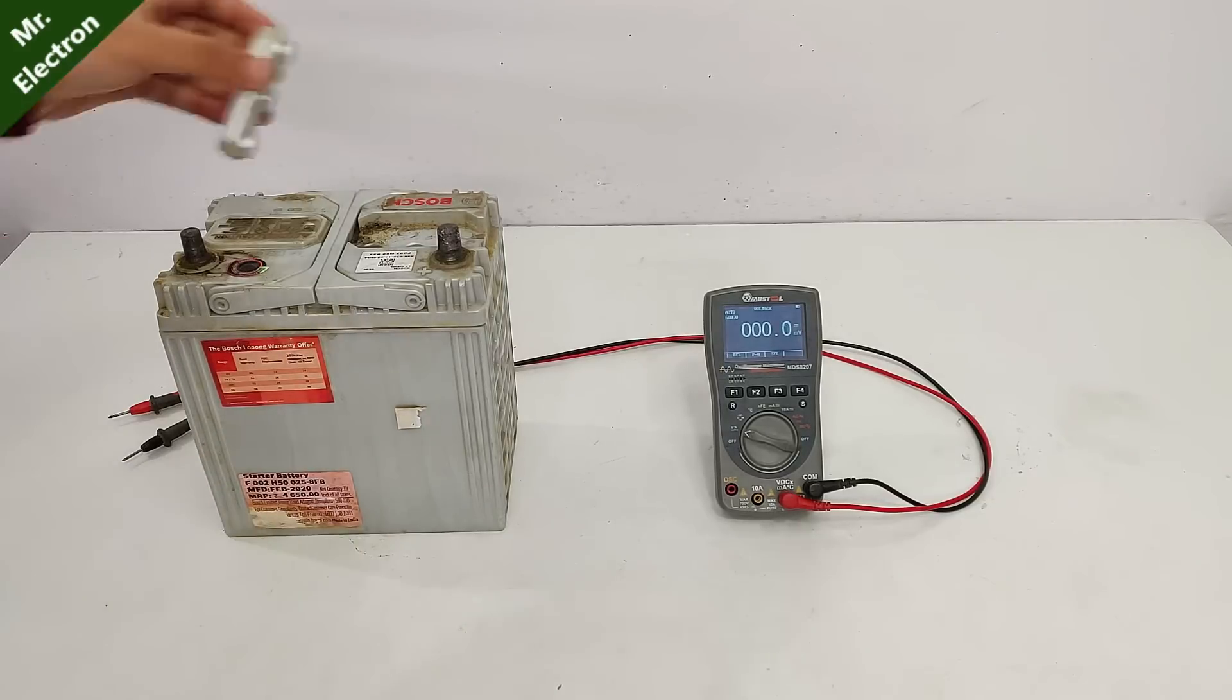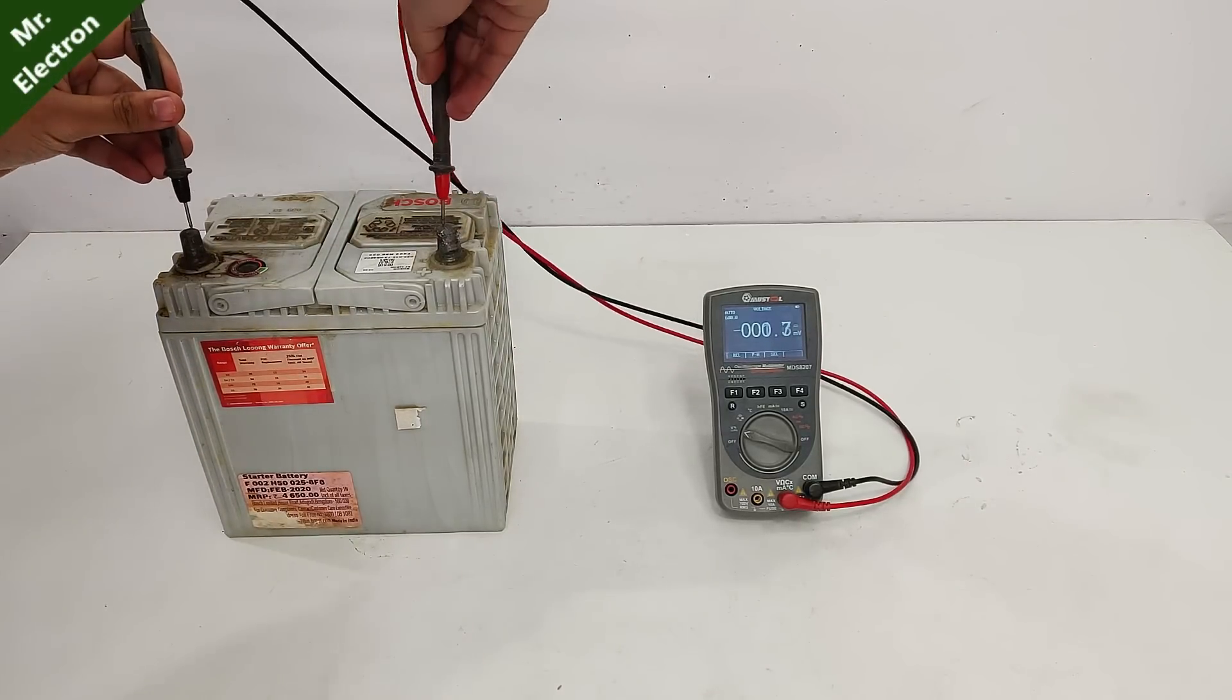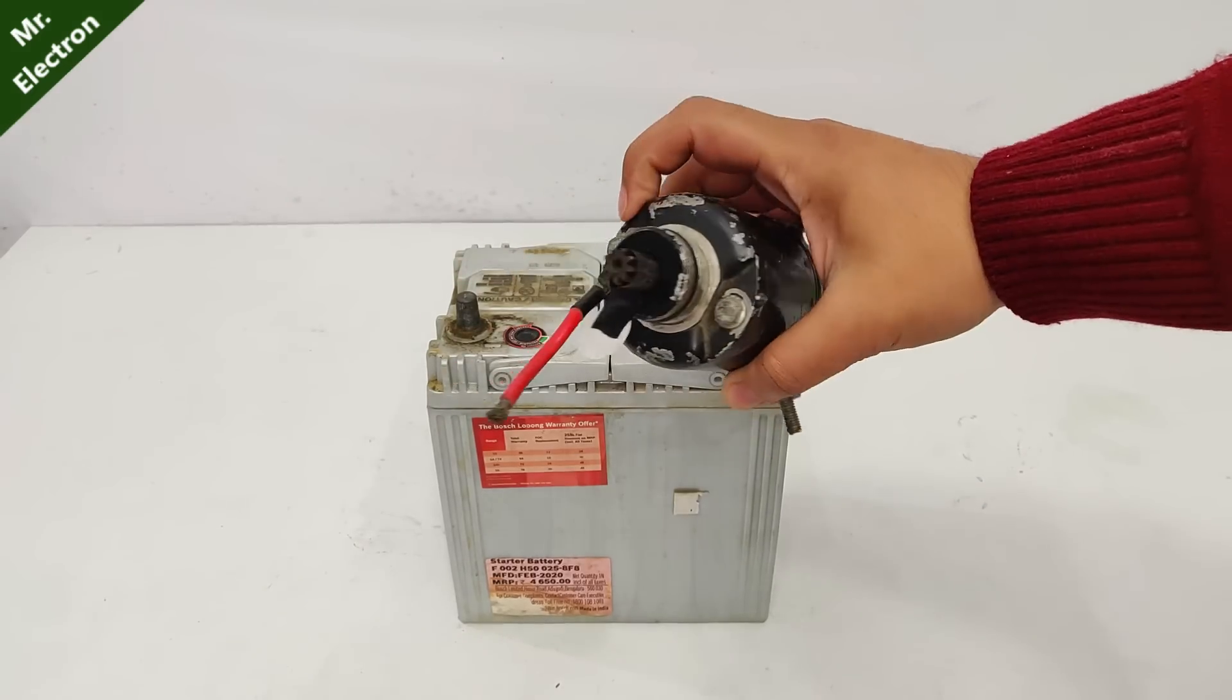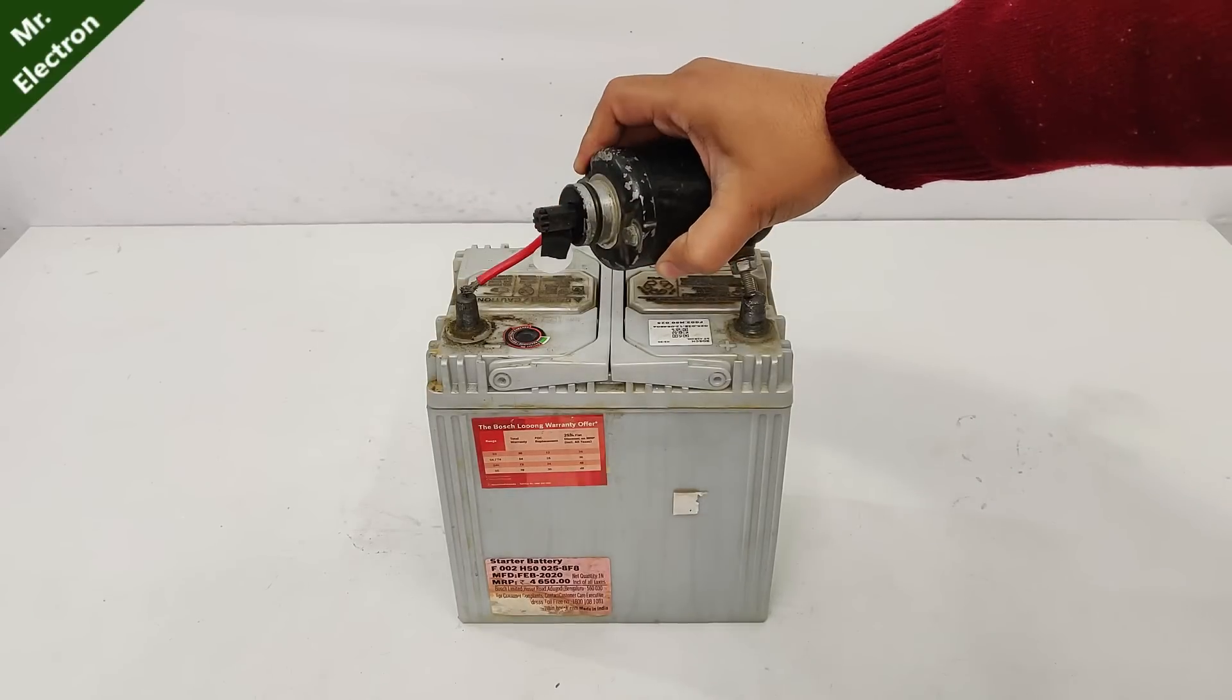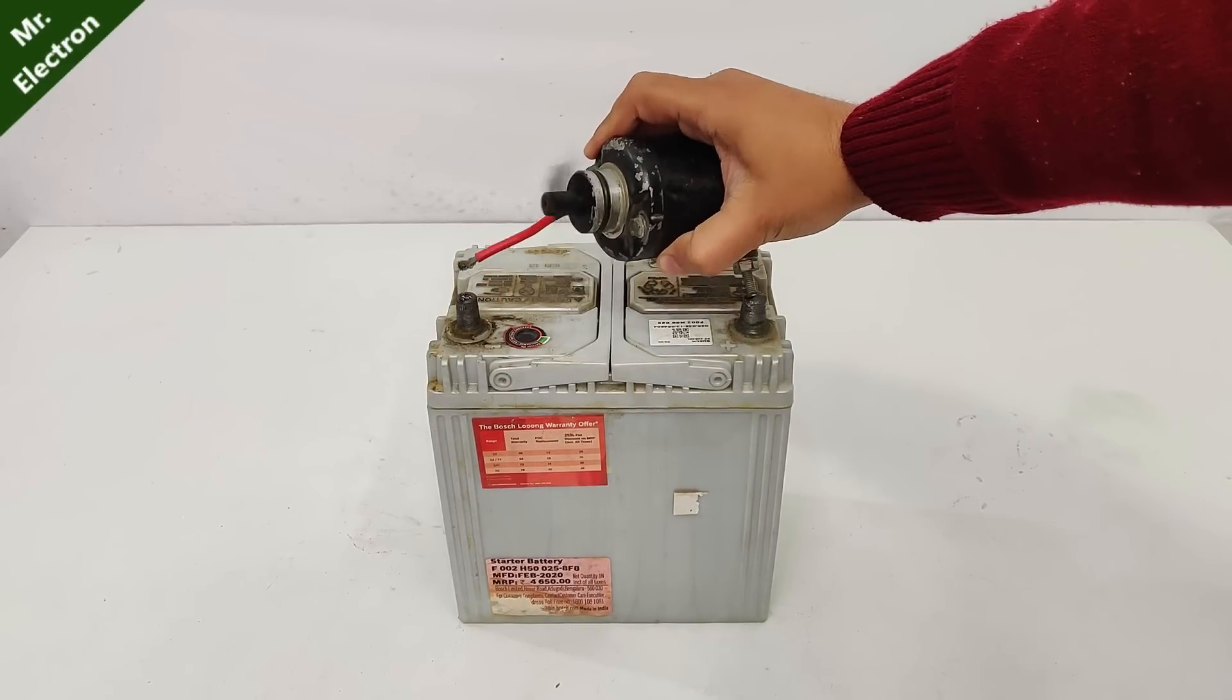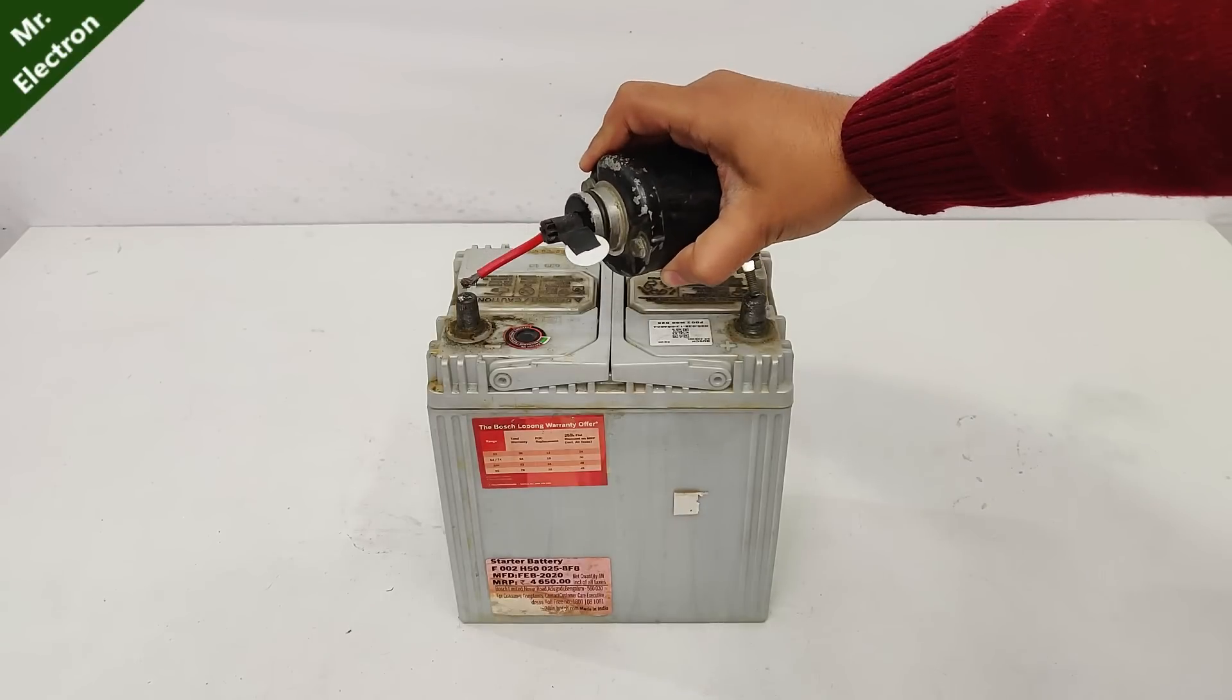So after charging it for some time you can see the battery voltage has stabilized at 13 volts. And if I connect my bike starter motor now you can see that it is running much faster. There is no comparison now.